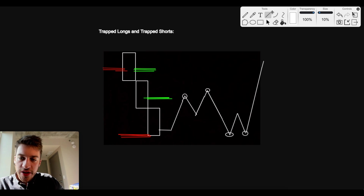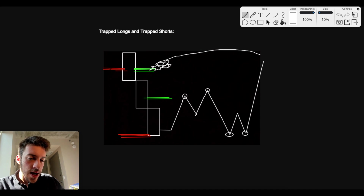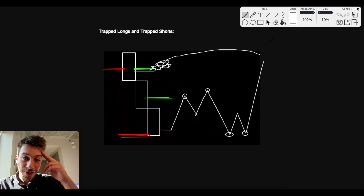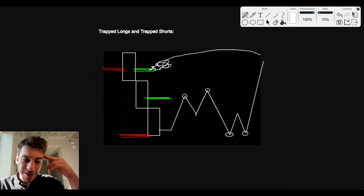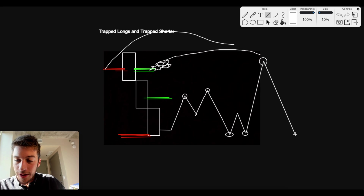Once price goes above their break even, they were previously holding a profitable position. They're probably not going to be inclined to just take a loss. So what this means is we have a lot of interested sellers — the longs who are now profitable. And now these shorts are disinterested buyers. Once price goes above their break even, they're holding an unprofitable position and it hurts to take a loss, meaning they're not really interested in buying, so there's not as much demand. With less demand and more supply, price is probably going to go right back down.